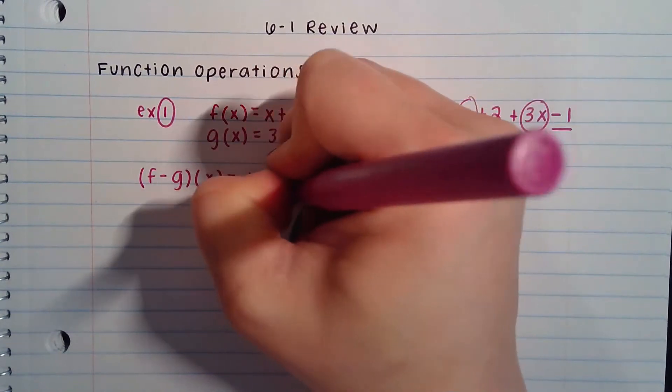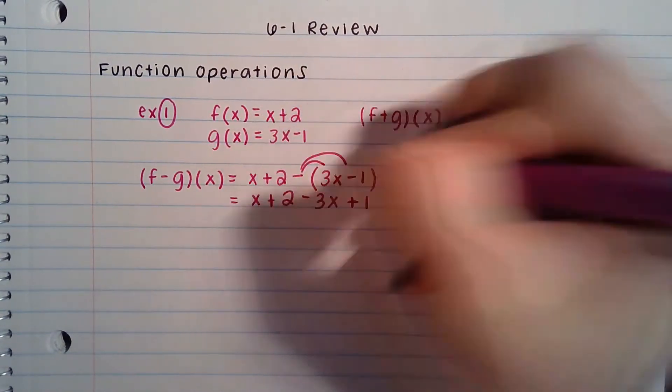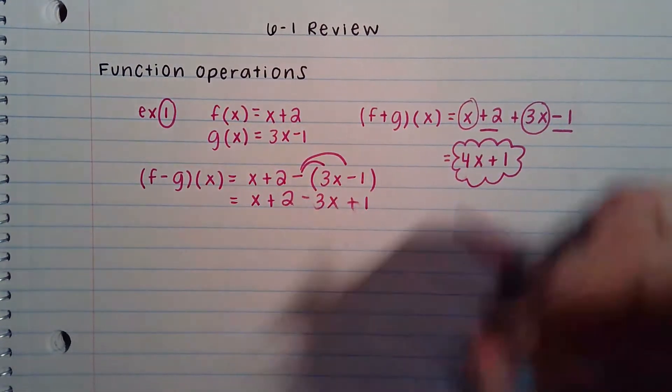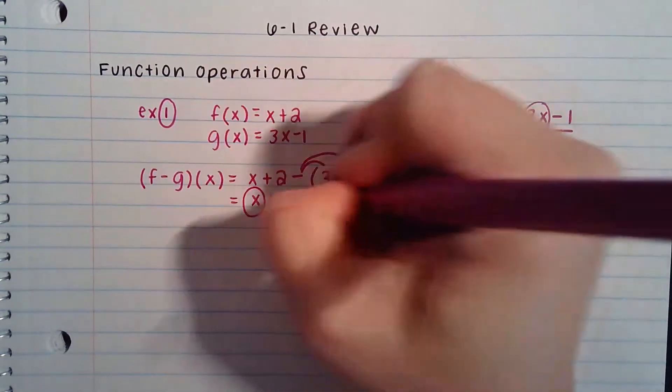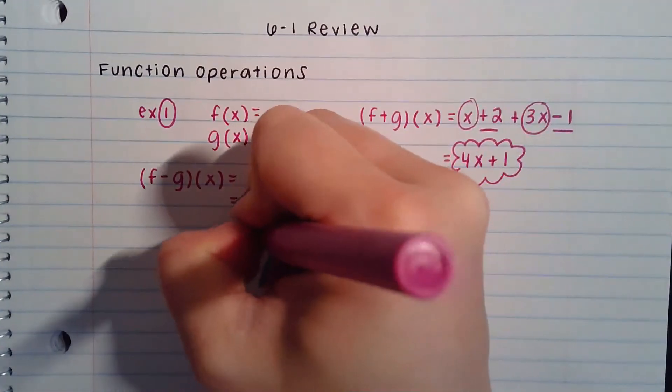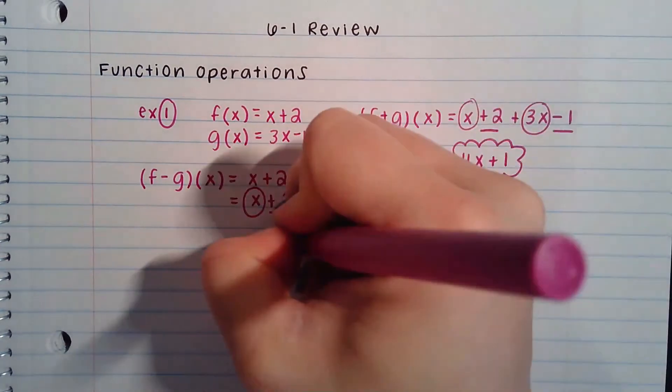So really, this is x plus 2 minus 3x plus 1. The minus times the negative 1 makes that the plus 1. Combine any like terms that you have. x and negative 3x would give you negative 2x, and 2 plus 1 would give you 3.